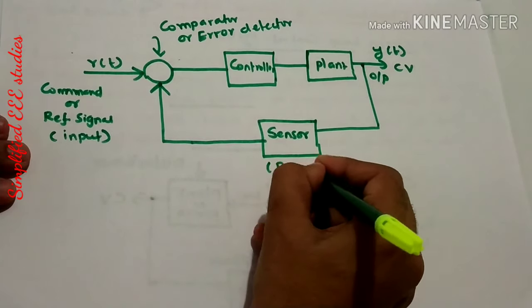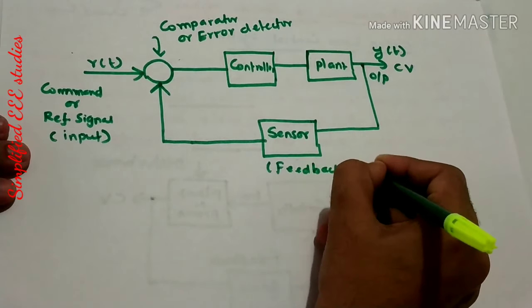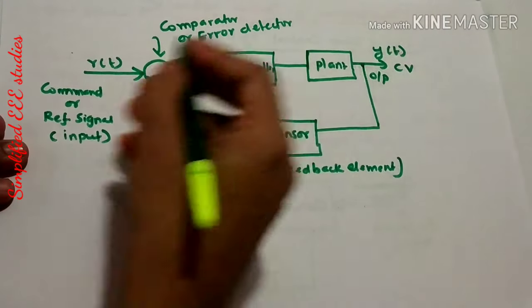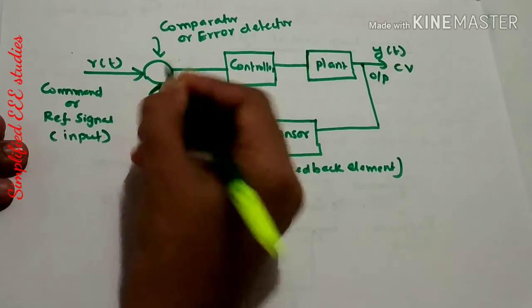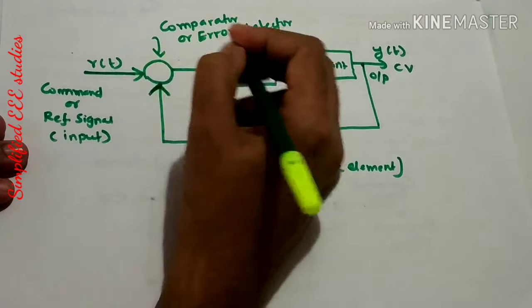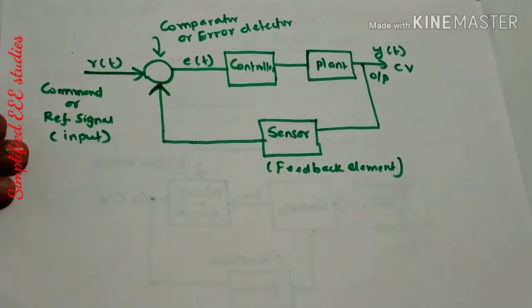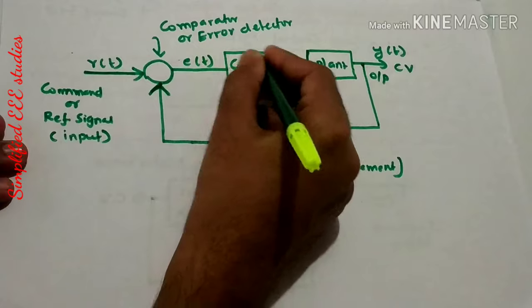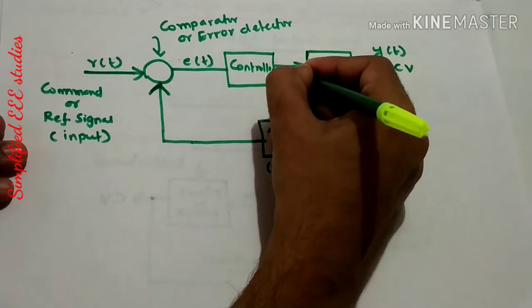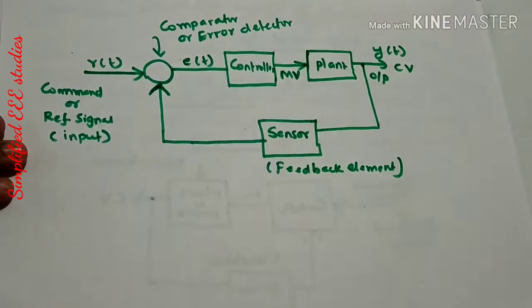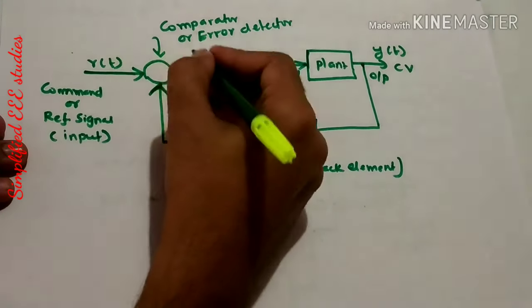This will be the feedback element. The difference between the reference signal and the feedback signal is known as the error signal, represented by E(t). This error signal feeds to the controller, which generates the manipulated variable. The error nullifying process will be continuously and repeatedly taking place in the closed loop control system.